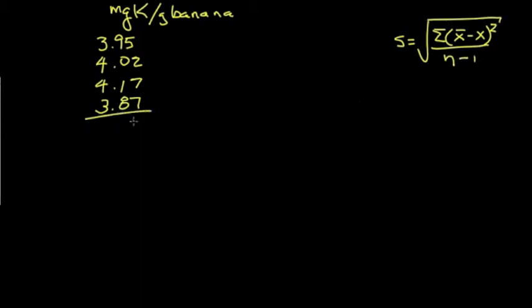We can take the average pretty easily here, and I'll just give you what I calculate, 4.0025. I'm going to carry some extra digits here, and we'll talk about how to decide on how many to use later. Our equation says we're going to take the average, subtract the individual value from it.